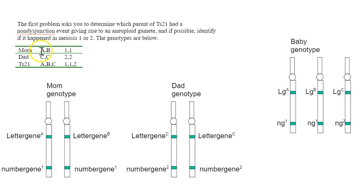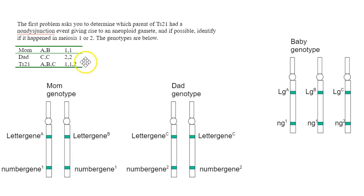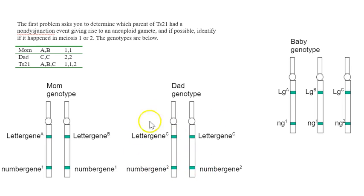Mom has the A and B alleles for the letter gene and the number one allele for the number gene. So before meiosis she has: letter gene A, number gene one, and letter gene B, number gene one. Dad's genotype is a little different — he's homozygous for both genes: letter gene C, letter gene C, number gene two, number gene two. That's his genotype before he goes through meiosis.